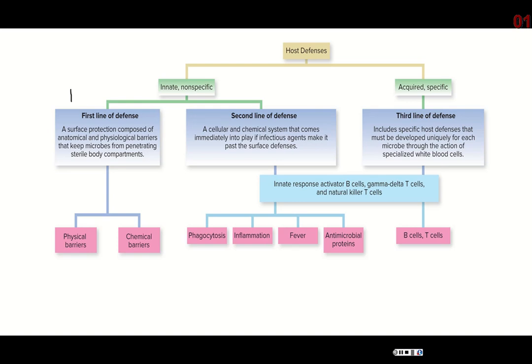If pathogens do make it past the first line of defense, then you go to the second line of defense, which is non-specific. That means they don't really know what they're fighting — they're just fighting anything that looks foreign. Your body cells have special protein markers on them that identify them as self, and anything with protein markers or antigens that do not match self will be considered foreign.